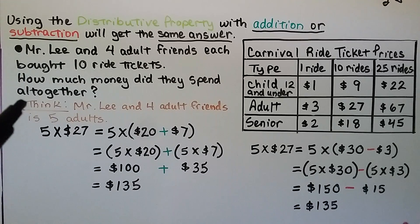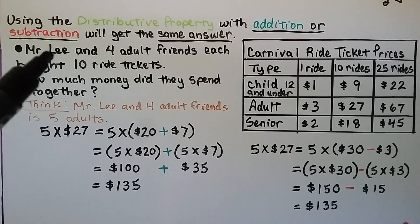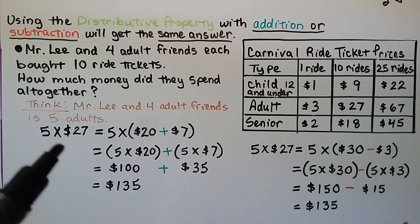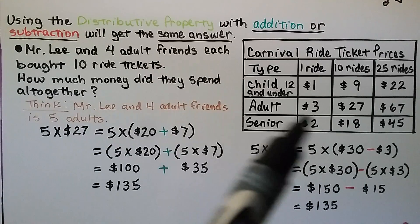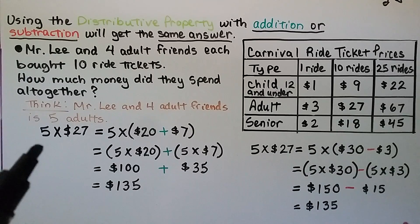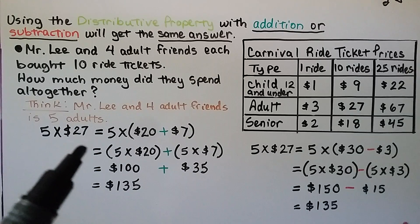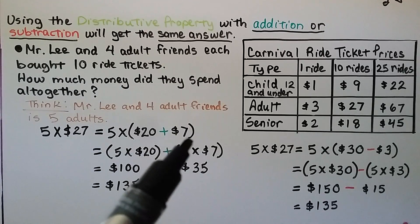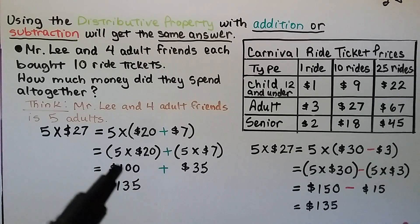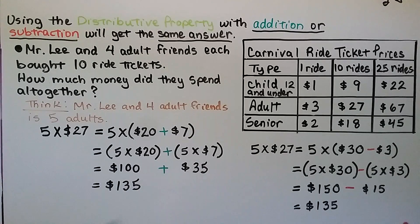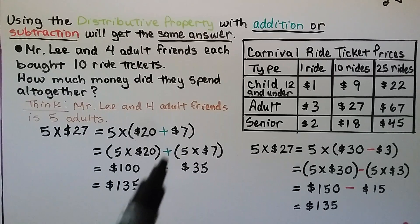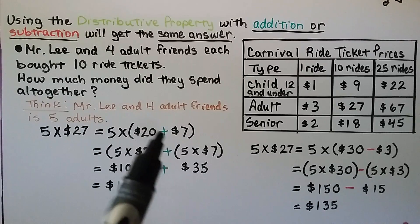So Mr. Lee is an adult, and we think Mr. Lee and 4 adult friends is 5 adults. We count him and his 4 friends. An adult ticket for 10 rides is $27. We're going to do 5 times $27. We can break the $27 into $20 and $7 and do 5 times $20, which is $100, and 5 times $7, which is $35. It equals $135.